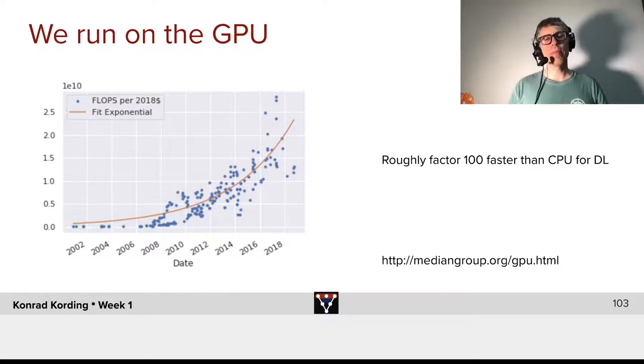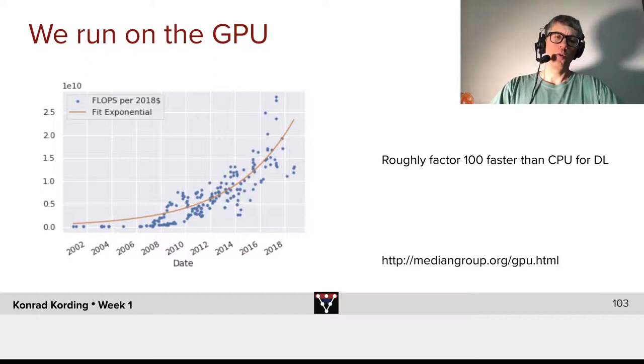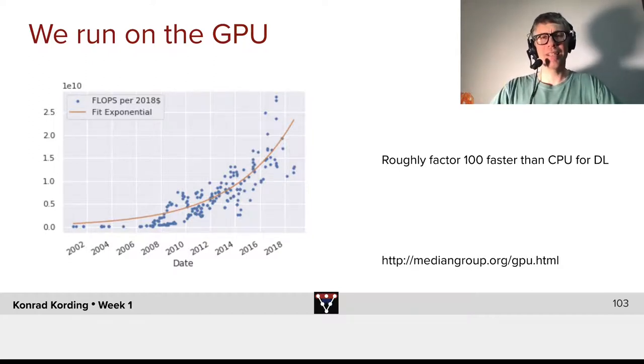Just as a reminder, why is deep learning so possible now, relative to, say, when I was interested in the same questions in the 90s? Well, we run on GPUs these days, and GPUs have gotten incredibly efficient.